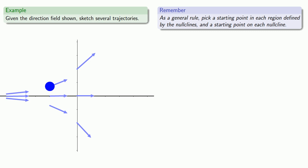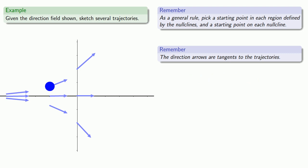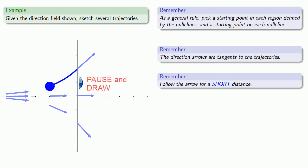There are two things to keep in mind. The important one is that the direction arrows are tangent to the trajectories. That means the curve goes roughly in the same direction as the direction arrow, so what we might do is follow the arrow for a short distance. That takes us near another direction arrow right here, and again the direction arrow should be tangent to the trajectory, so we'll follow this arrow for a short distance. It's also useful to draw the portion of the trajectory leading up to our chosen starting point, looking at the direction arrows before our starting point.